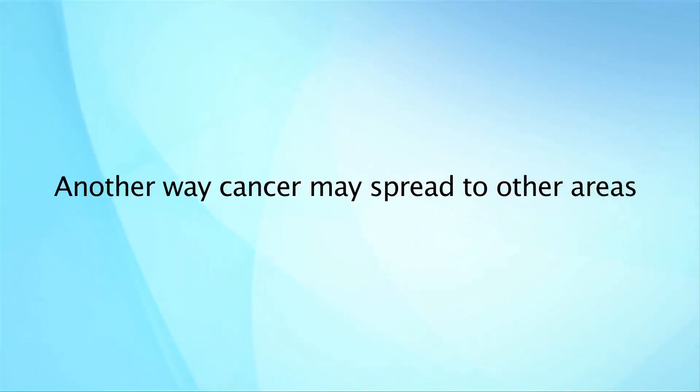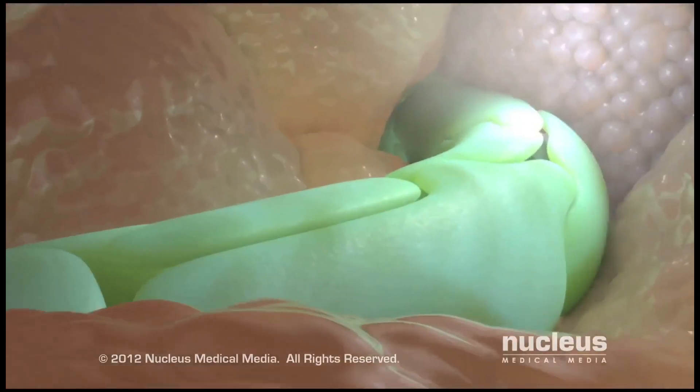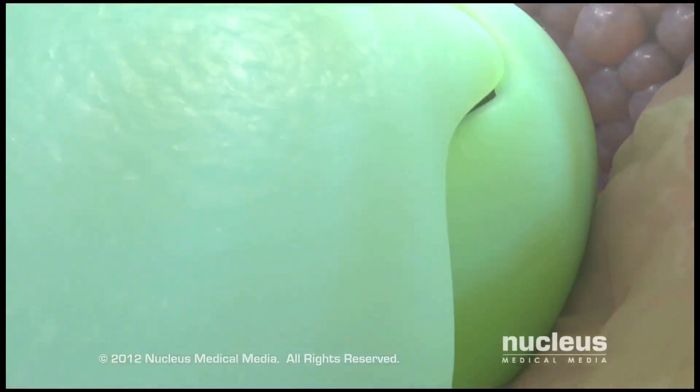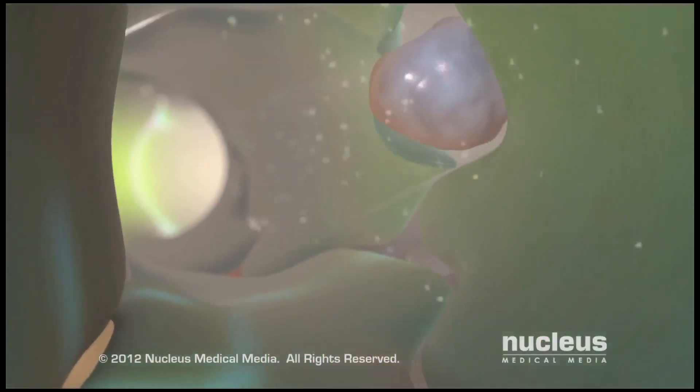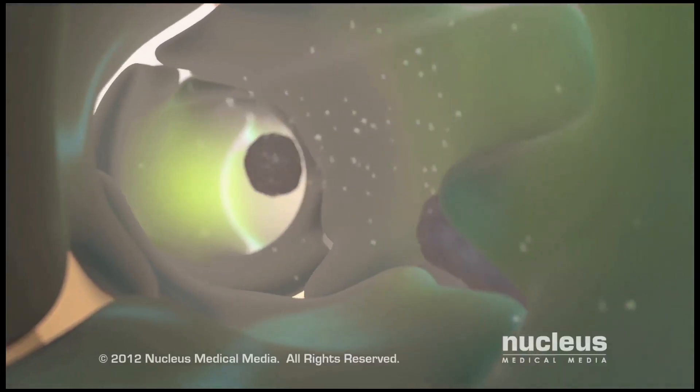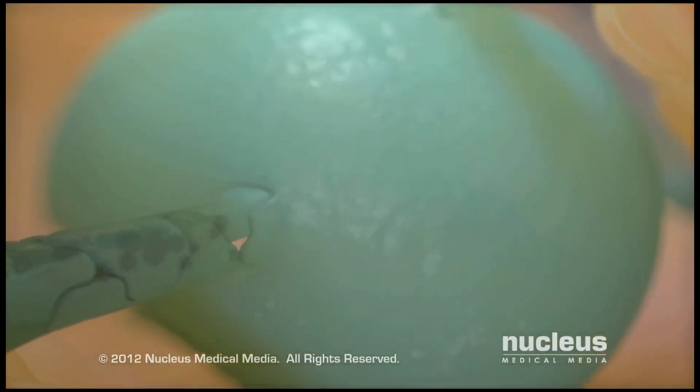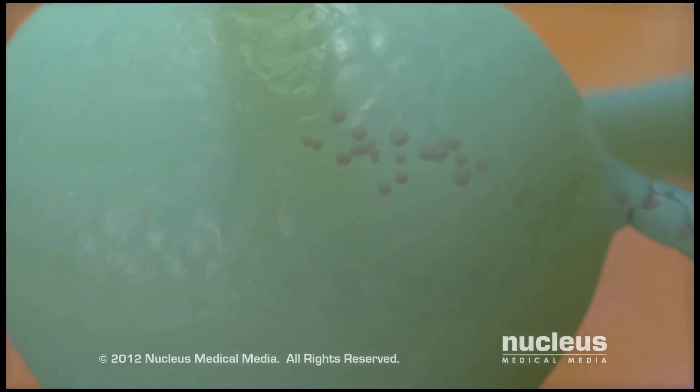Another way cancer may spread to other areas of your body is through your lymphatic system. Cancer cells may enter lymph vessels near the tumor, then travel to small glands called lymph nodes. If the cells pass through the nodes, they may continue to travel through your lymphatic system and form additional tumors.